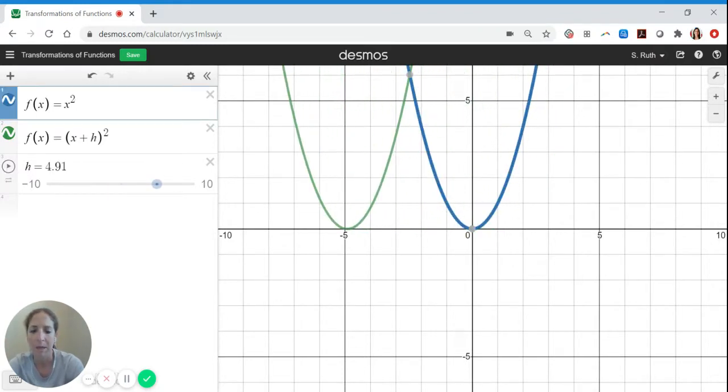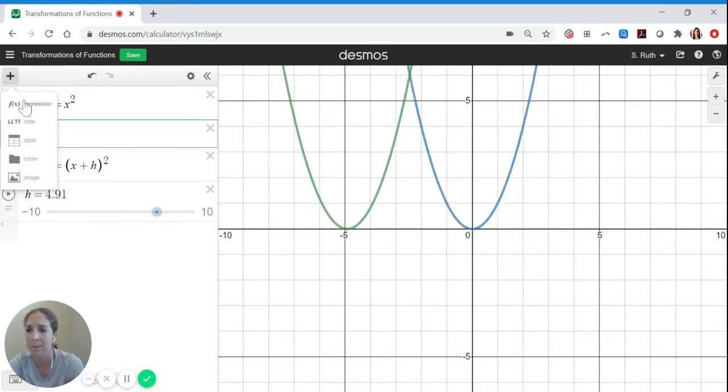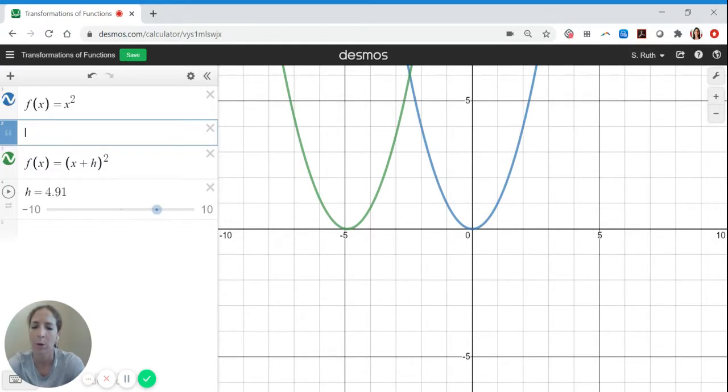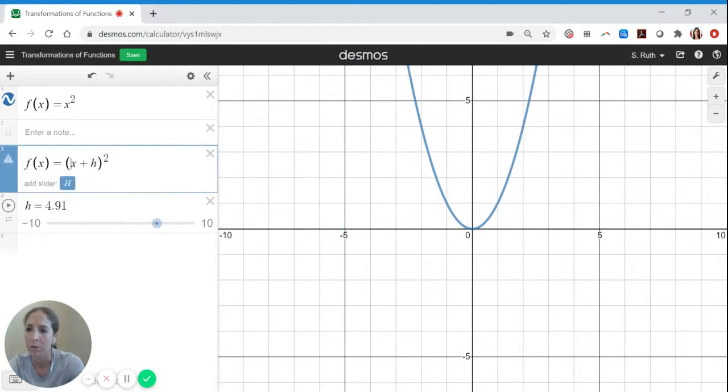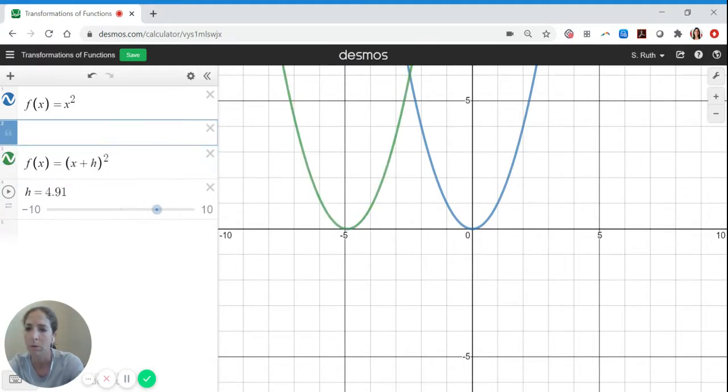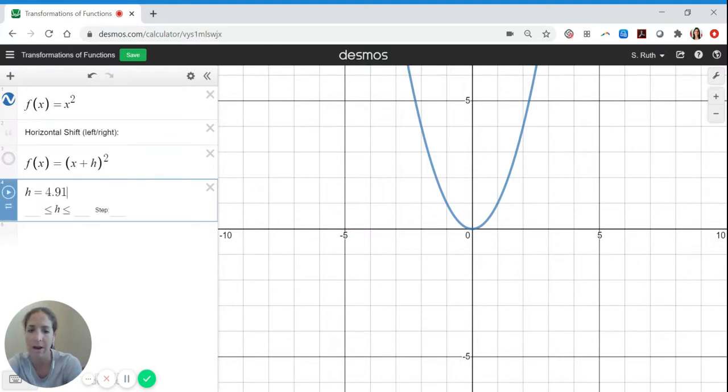But let's, again, be thorough about this and add some notes. So I can say horizontal shift, what we just did there, which is left, right. Okay, so that's what h does. It's typical to refer to h as the horizontal shift. And then we saw that to get a vertical shift, it's typical to use a value k.